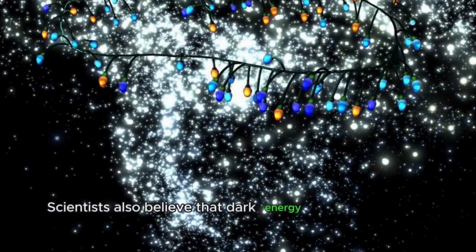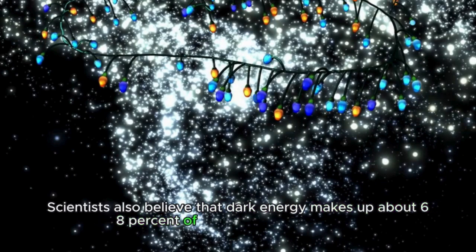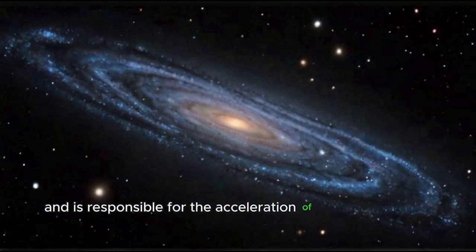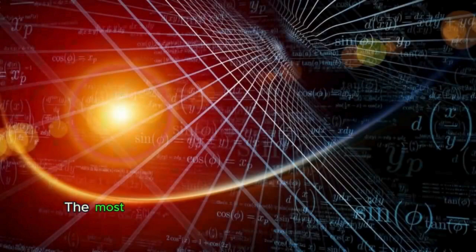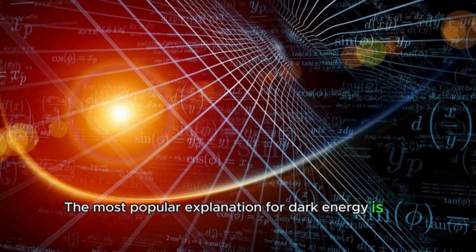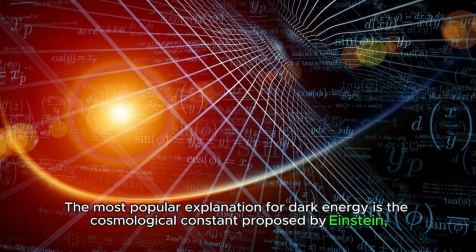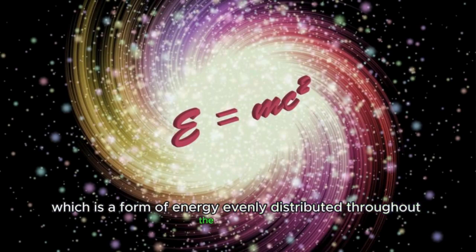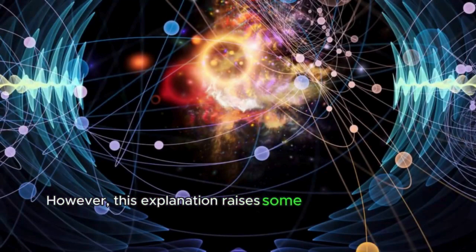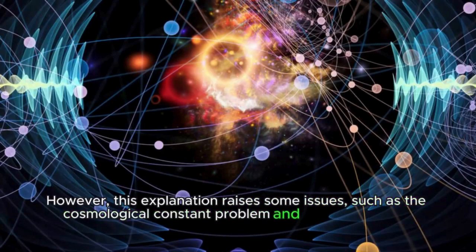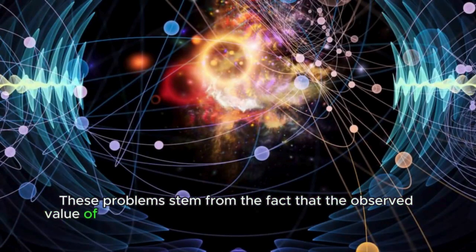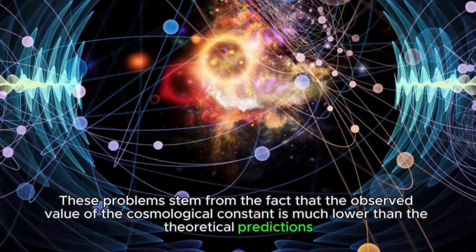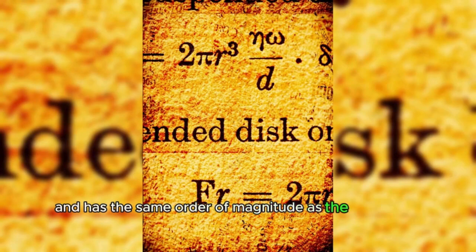Scientists also believe that dark energy makes up about 68% of the observable universe and is responsible for the acceleration of the expansion of the universe. Its existence is confirmed based on observations, but the nature of dark energy is not entirely clear. The most popular explanation for dark energy is the cosmological constant proposed by Einstein, which is a form of energy evenly distributed throughout the universe. However, this explanation raises some issues, such as the cosmological constant problem and the coincidence problem. These problems stem from the fact that the observed value of the cosmological constant is much lower than the theoretical predictions, and has the same order of magnitude as the density of dark matter.